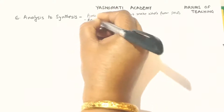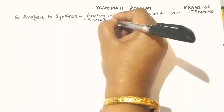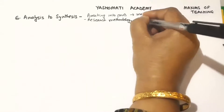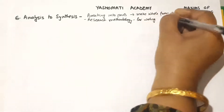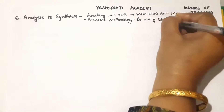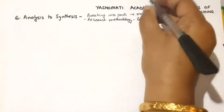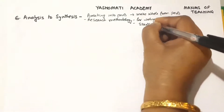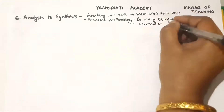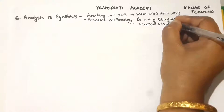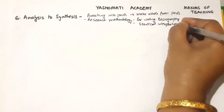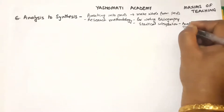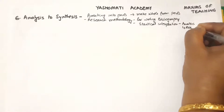Like in research methodology, it is used when we are writing bibliography, as well as when we are doing statistical interpretation. During statistical interpretation, we do analysis of data — first we analyze the data, and then from the analysis of data, we synthesize the result.